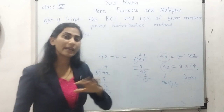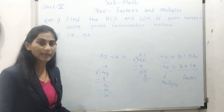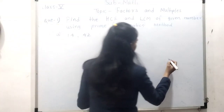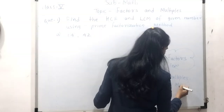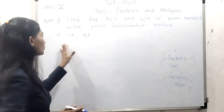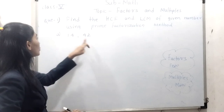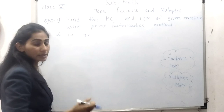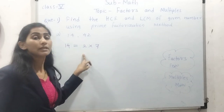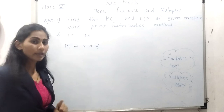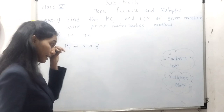Multiples are many — they are infinite, because natural numbers are infinite. But factors are few. So remember: factors are few and multiples are many. Now, to find the HCF and LCM using the factorization method, we need to do prime factorization — writing the numbers as a product of prime numbers. Prime numbers have only two factors: 1 and the number itself. For example, 2 and 7 are prime numbers.